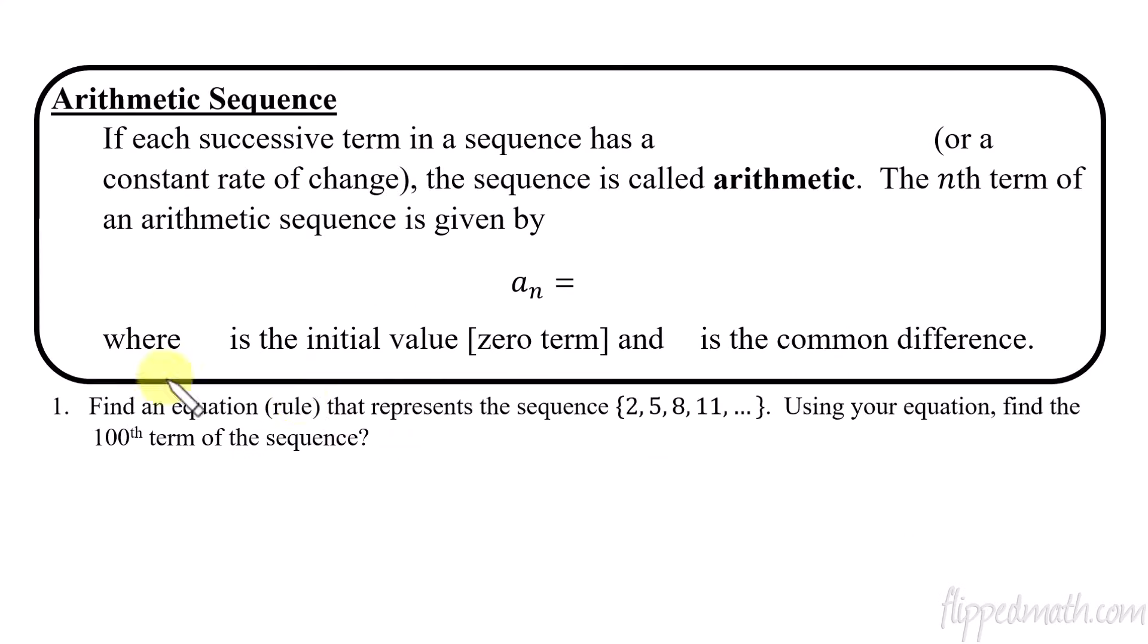Now let's talk about arithmetic sequences. So an arithmetic sequence is when you have the successive terms, in other words, one term after the other after the other. If the difference between those terms has what we call a common difference, or in other words, a constant rate of change.